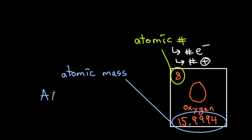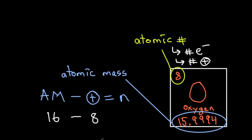If I label atomic mass as AM, then: neutrons = AM − number of protons. For oxygen: 15.9994 ≈ 16, minus 8 protons, gives 8 neutrons. This is how you find the number of neutrons whenever this type of question appears on the test. Past test examples may have different twists, but this knowledge is sufficient to solve the question on the IMAT.